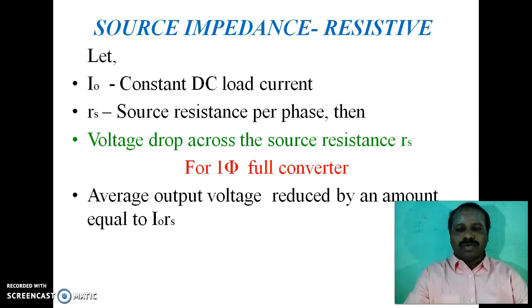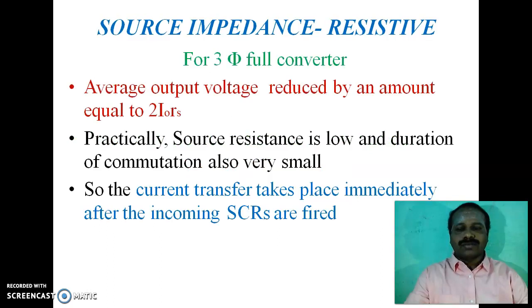There is a voltage drop across the source resistance RS. This voltage drop for a single-phase full converter is I0 × RS. So the average output voltage is reduced by an amount equal to I0·RS. For a three-phase full converter, the average output voltage is reduced by an amount equal to 2·I0·RS — that is, double the drop of the single-phase full converter. Practically, source resistance is low and duration of commutation is very small, so current transfer takes place immediately after the incoming SCRs are fired.